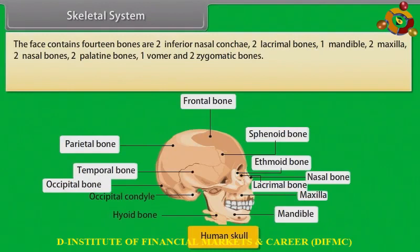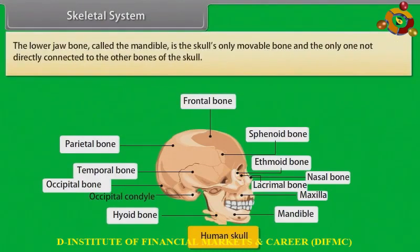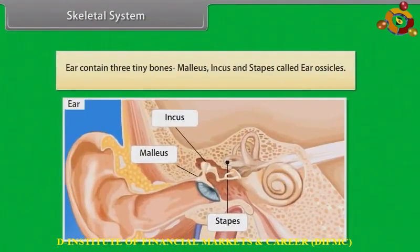The face contains fourteen bones: two inferior nasal conchae, two lacrimal bones, one mandible, two maxilla, two nasal bones, two palatine bones, one vomer, and two zygomatic bones. The hyoid bone is present at the base of the buccal cavity. The lower jaw bone, called the mandible, is the skull's only movable bone and the only one not directly connected to the other bones of the skull.